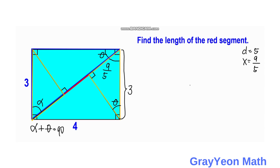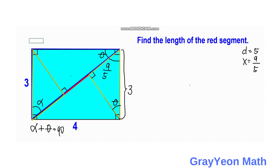Looking at the second orange triangle, since this angle is also alpha, the complementary angle is theta. Since these two orange triangles have a side between two congruent angles, by the Angle-Side-Angle congruence theorem, these two triangles are also congruent. Therefore, this length is also 9 over 5.